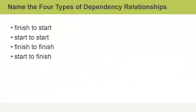The four types of dependency relationships are: finish to start, start to start, finish to finish, and start to finish.